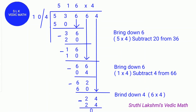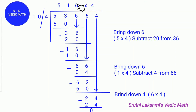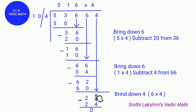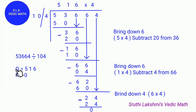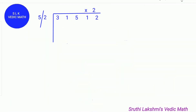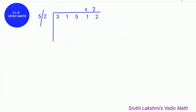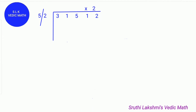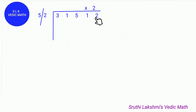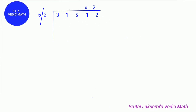Then we do the last digit of the quotient times the last digit of the divisor: 6 times 4 is 24. So we do 24 minus 24, which equals 0. So the quotient is 516 and the remainder is 0. Let's see another example: 31512 divided by 52. The dividend is 31512 and the divisor is 52.